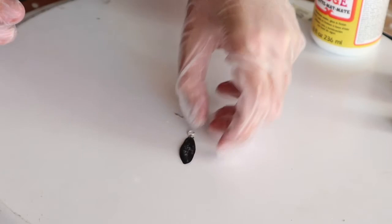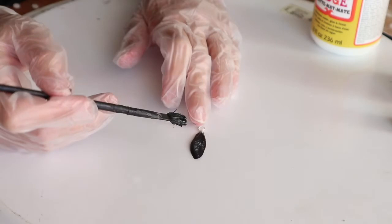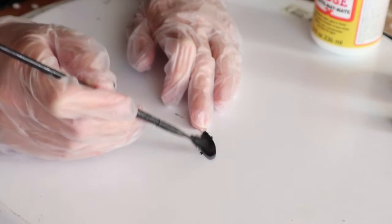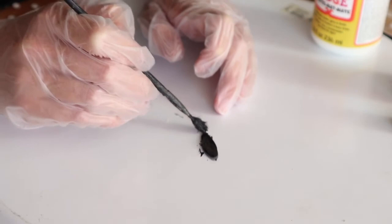Next, paint the other side. Apply two coats on each side of the wing.